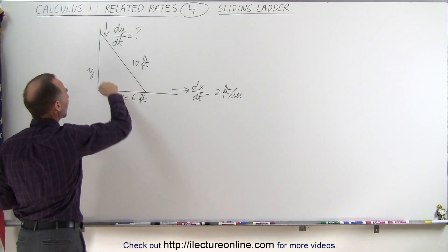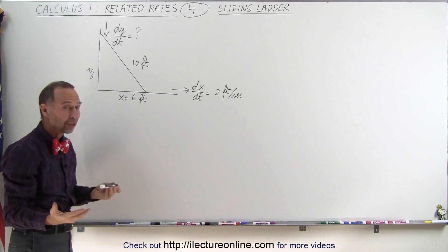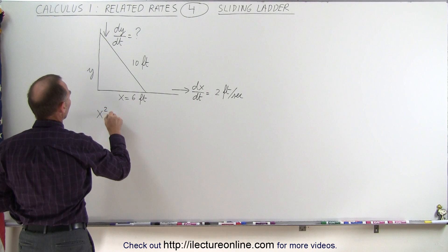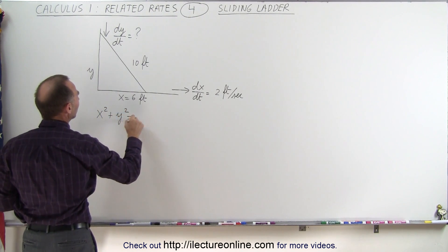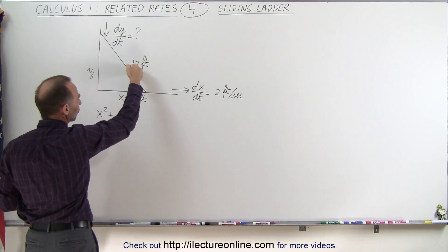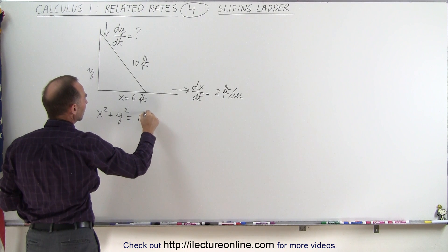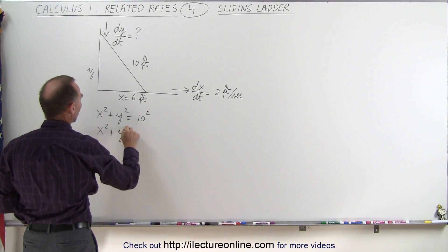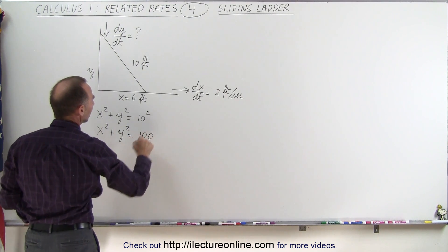Since this is a right triangle, we can use Pythagorean Theorem. We can say that x squared plus y squared is equal to the hypotenuse squared, which is 10. So x squared plus y squared equals 100.